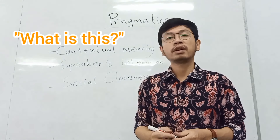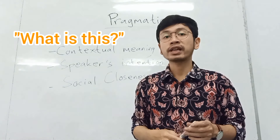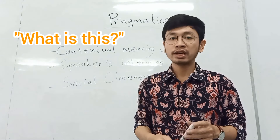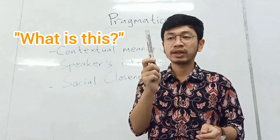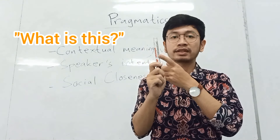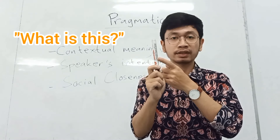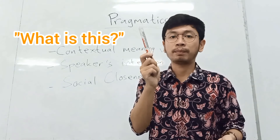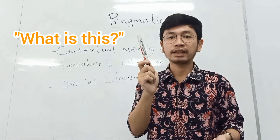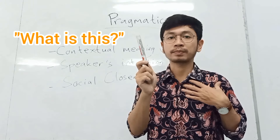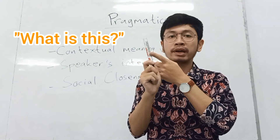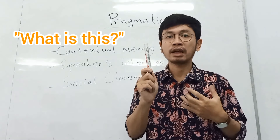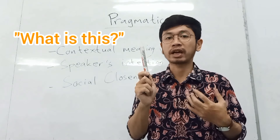For example, if we have 'what is this?' — you can only understand my utterance when you know what the object is. When I say 'what is this?' I'm showing this thing, right? This is the object that is referred to by the word 'this.' So you can understand my question 'what is this?' by knowing the context — me as the speaker and this marker as the object, or the referent of the pronoun 'this,' that I use in my question.